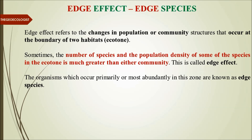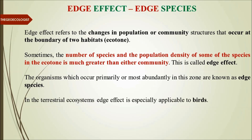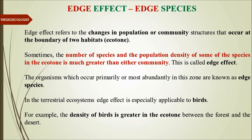Organisms that occur primarily or most abundantly in this ecotone zone are called edge species — their density is greater than the communities in the adjoining ecosystems. In terrestrial ecosystems, edge effect is largely applicable to birds. For example, the density of birds is greater in the ecotone than in the forest or agricultural land on either side. In the shrub or grass area between agricultural land and forest, you will find more density of birds — that is the best way to understand edge effect.